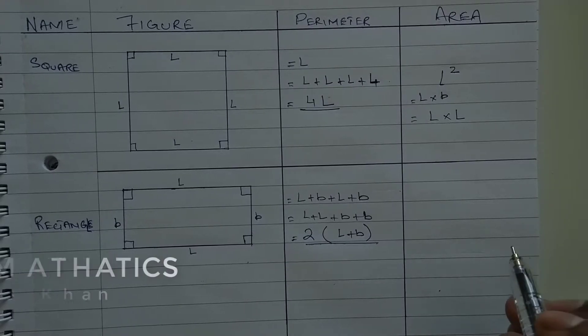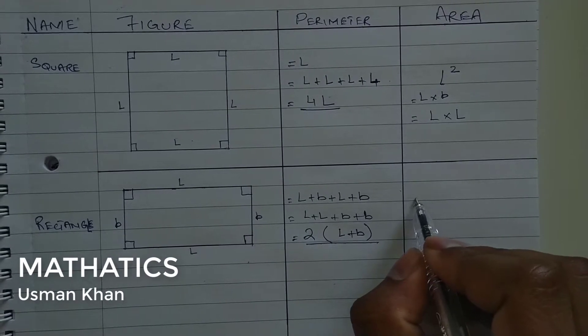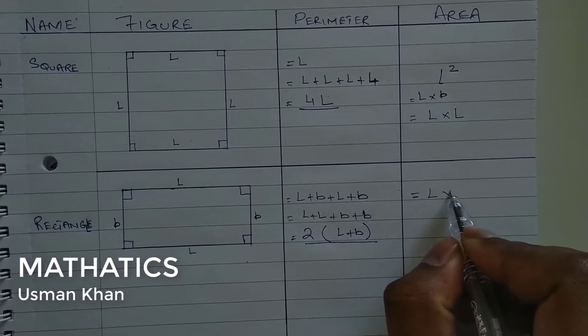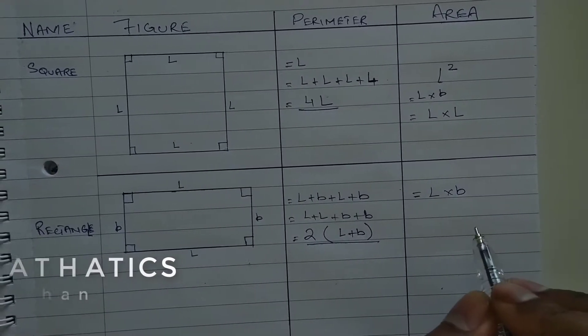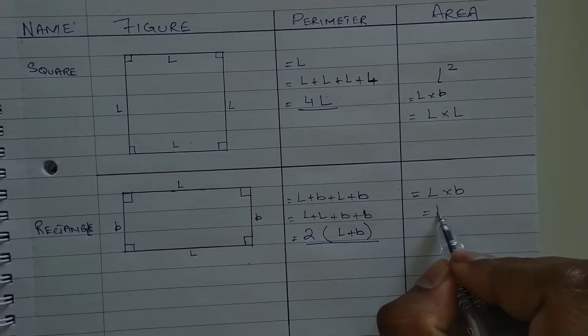Calculating the area of rectangle is similar to calculating the area of a square. As we have two opposite sides of equal length, we multiply length by breadth. The formula becomes LB.